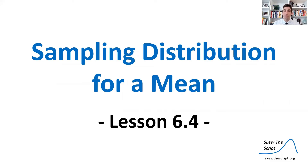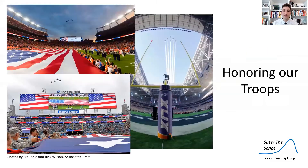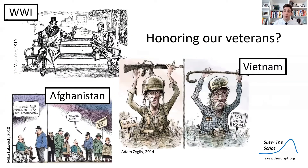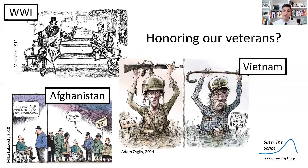Today's lesson is on the sampling distribution for a mean. This is lesson 6.4 in our course sequence. In the United States, at events like football games, we have big public displays to honor our troops. Yet when our troops return home from fighting, we don't always do the best job in truly honoring them.